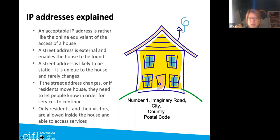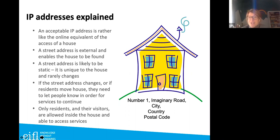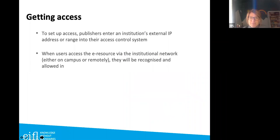IP addresses work a bit like a house: your street is external and static — it rarely changes, just as streets don't move. But if your address changes, you need to let people know. Only registered residents of that house are allowed to use its services. Similarly, with IP authentication, you don't want people who aren't registered with an institution using e-resources that the institution may have paid for.